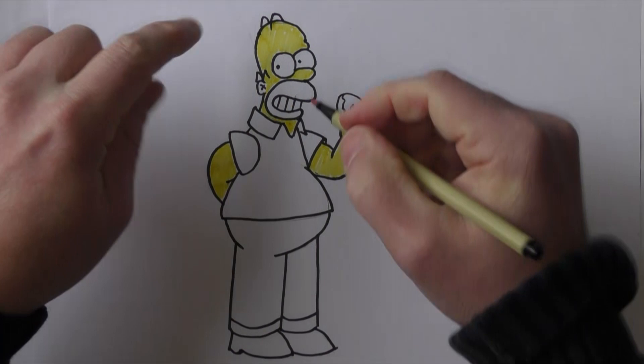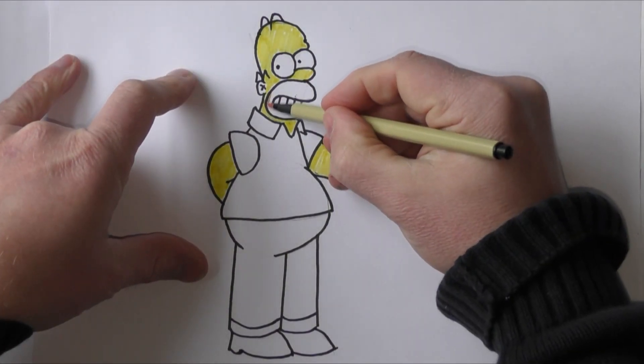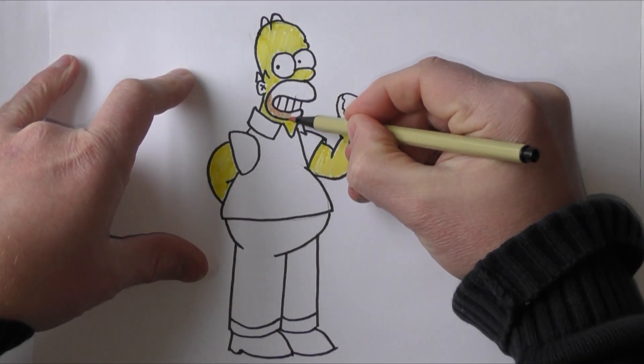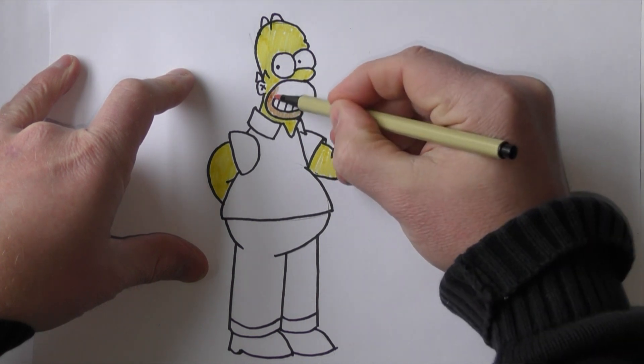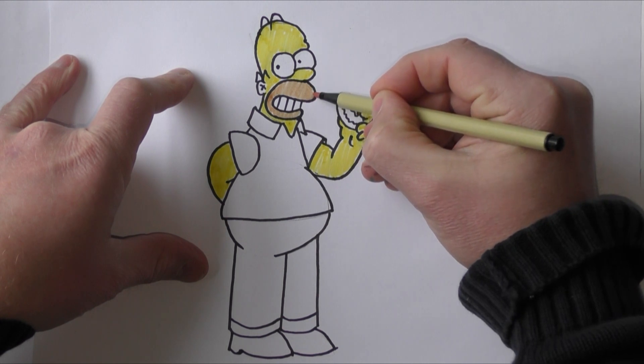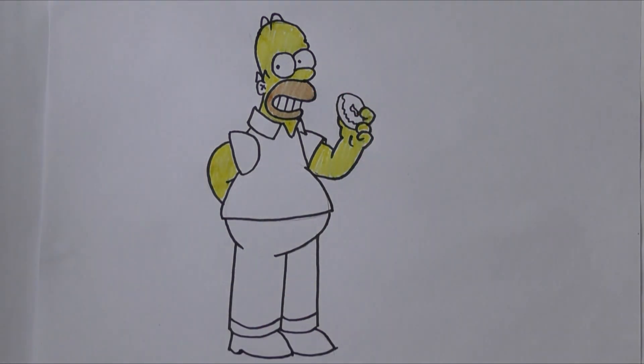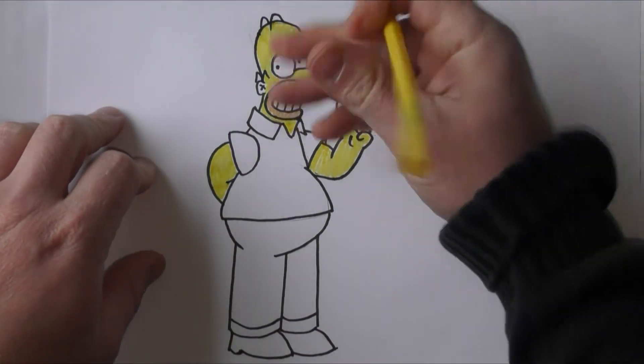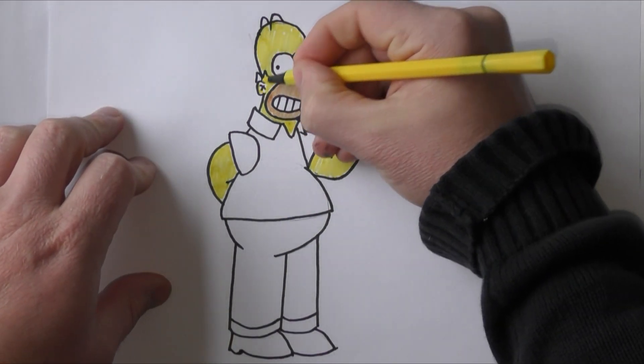Okay, now we're going to color in the piece around his mouth. Haven't quite got the right color here but it's pretty close so it's good enough. Just color that in. You see Homer's really taking shape now. Oh, just remember this bit here. There we go, that's done.